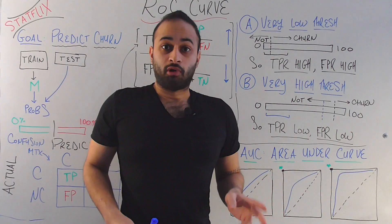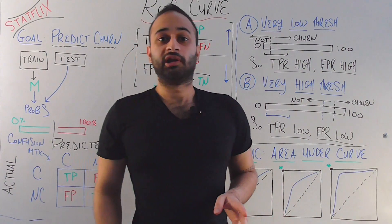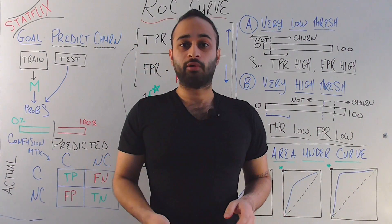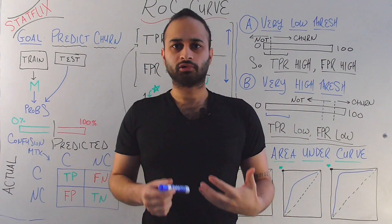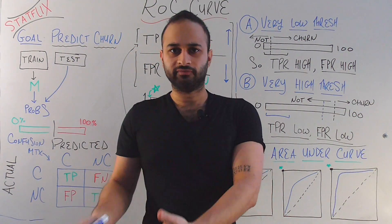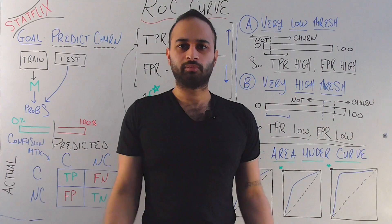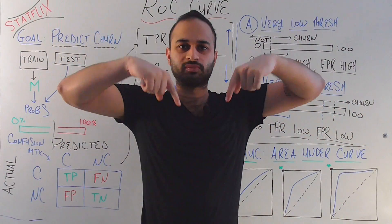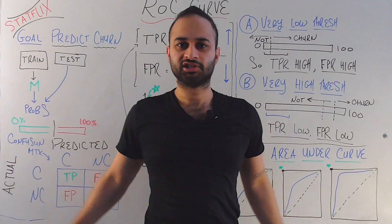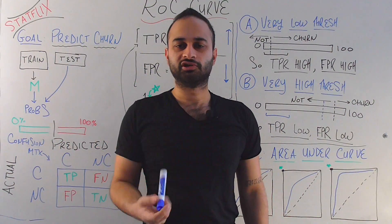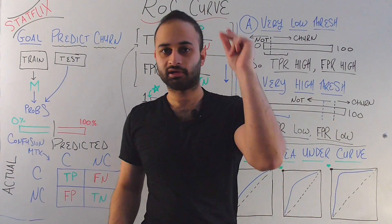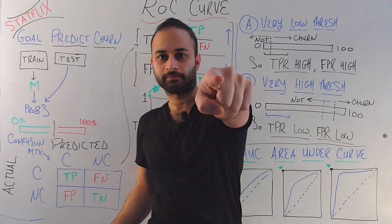So that was the ROC curve in a nutshell. Hopefully it helped you understand how we judge models in machine learning even better. If you have any questions, please leave them in the comments below, and please like and subscribe for more videos like this.